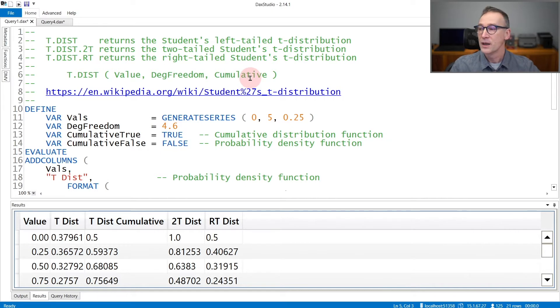You also have two other functions in the same family that return the two-tailed Student's t-distribution or the right-tail Student's t-distribution, and they are tdist2t and tdistrt.